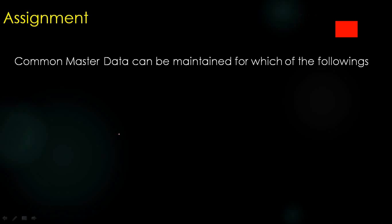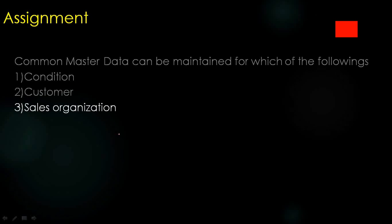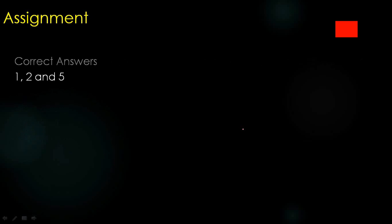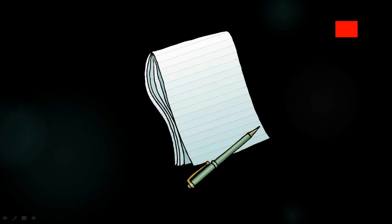For your assignment, here is a question: common master data can be maintained for which of the following? The options are: (1) condition, (2) customer, (3) sales organization, (4) output, and (5) material. Pause the video and think about the answer. The correct answer is options 1, 2, and 5 — condition, customer, and material. That's all for this topic, thank you very much.